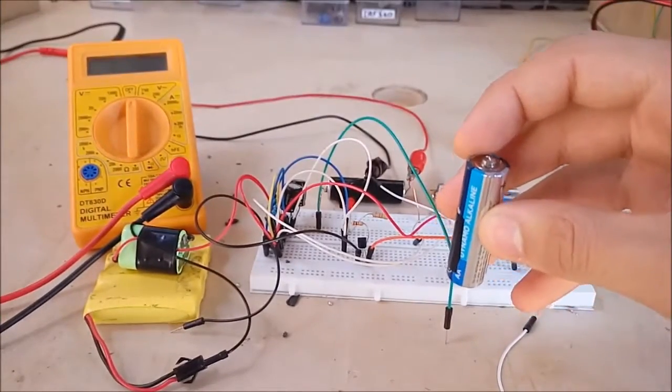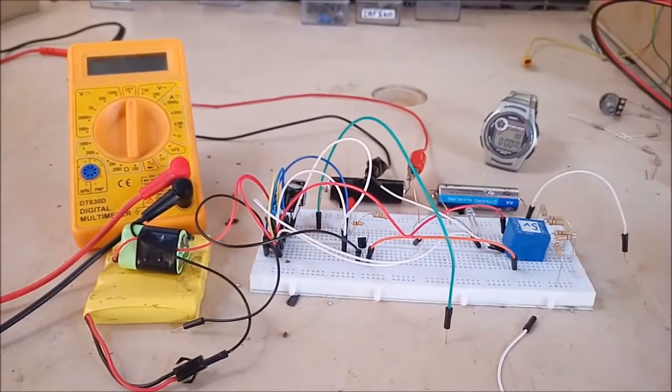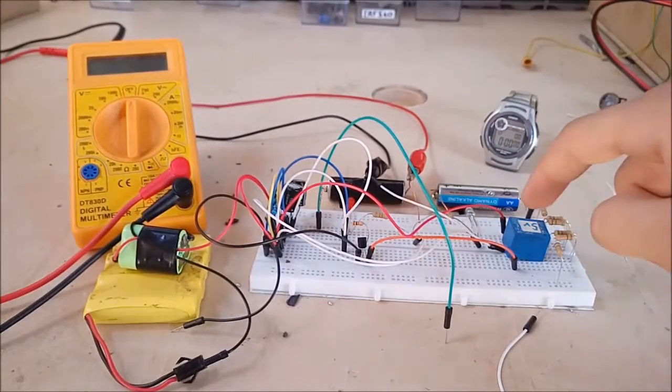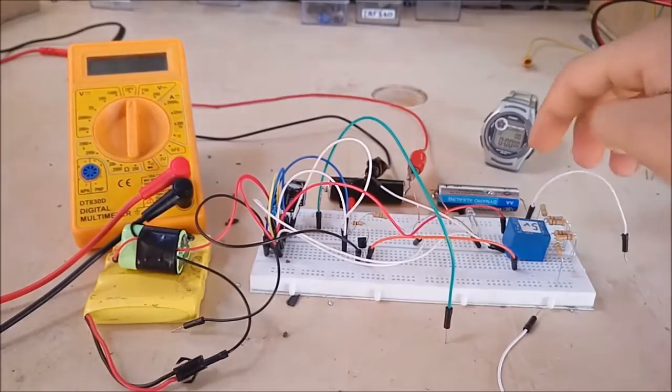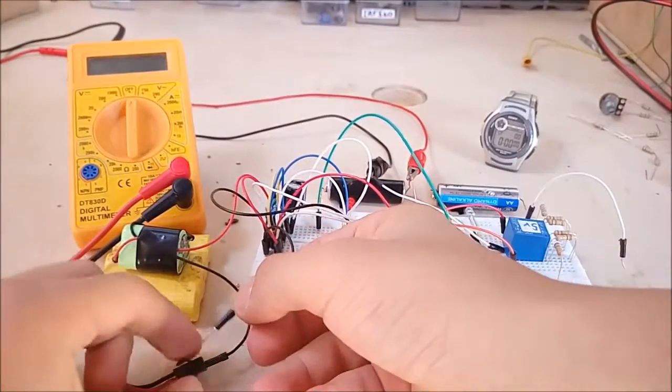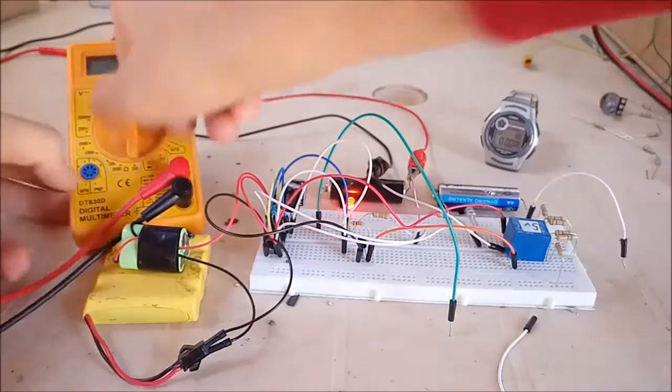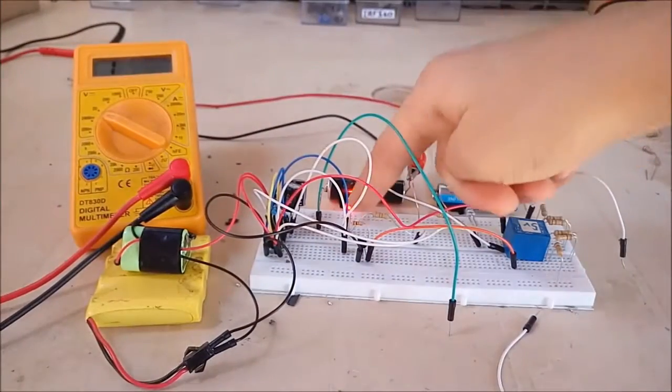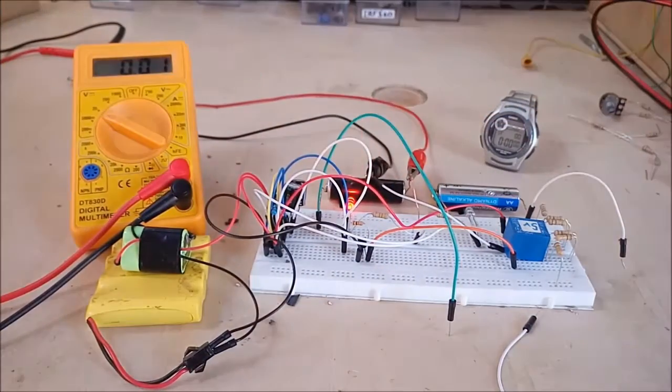But unfortunately I did short circuit it by accident, so I took it out and took a new one. Now the circuit in front of you is for switching the voltmeter from one battery to another. Here I will turn it on to see how it works. Now the LED is lighting here on this battery, which means that the voltmeter should measure the voltage of this battery.